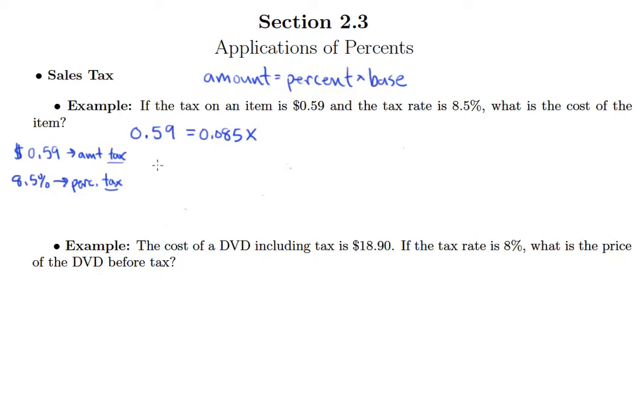At this point we can go ahead and solve our equation by dividing both sides by 0.085.